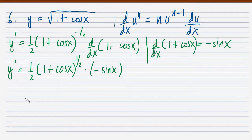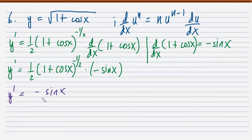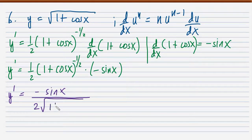After simplification, negative sine x moves to the numerator divided by 2 times the square root of 1 plus cosine x. That is our final answer for problem 6.